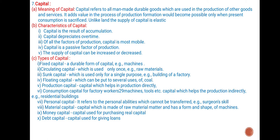Types of capital: Fixed capital — a durable form of capital, for example, machines. Circulating capital — which is used only once, for example, raw material. Sunk capital — which is used only for a single purpose, for example, building of a factory. Floating capital — which can be put to several uses, for example, coal. Production capital — capital which helps in production directly. Consumption capital — capital which helps in the production indirectly, that is, residential building.